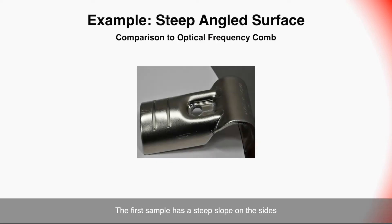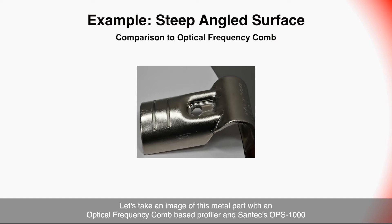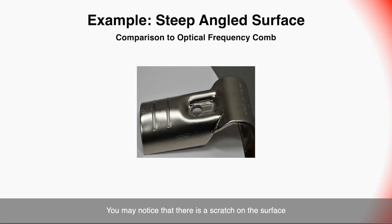The first sample has a steep slope on the sides. Let's take an image of this metal part with an optical frequency cone based profiler and Santec's OPS-1000. You may notice there is a scratch on the surface.